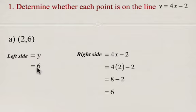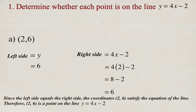So now you'll note that the left side is equal to 6 when we sub in, and the right-hand side is equal to 6. So that means the coordinates 2, 6 satisfy the equation of the line, and that means 2, 6 is a point on the line.